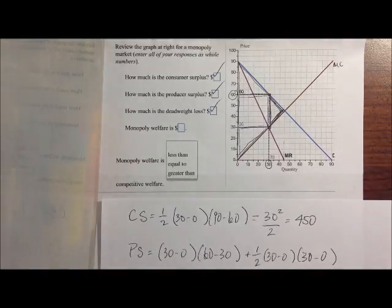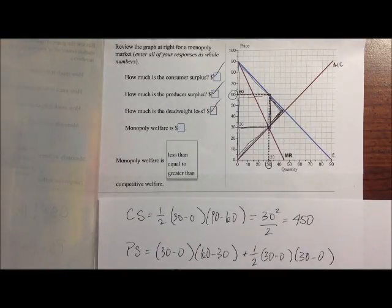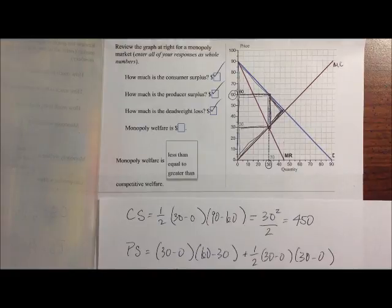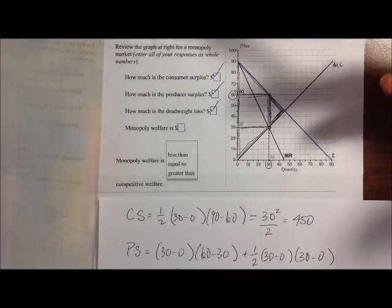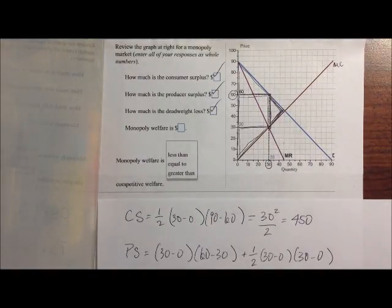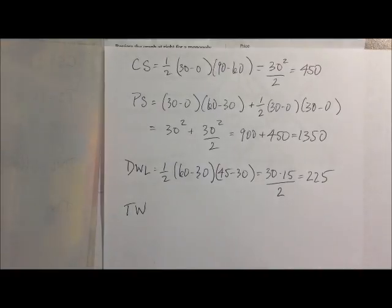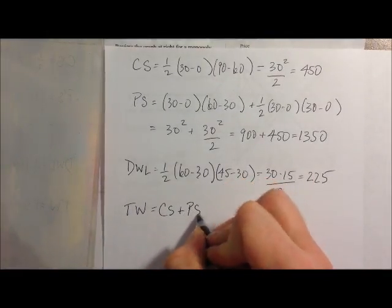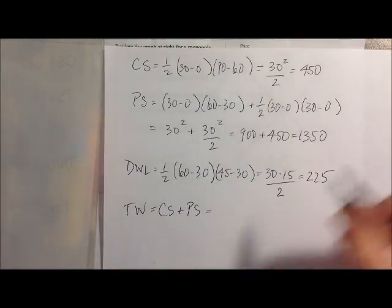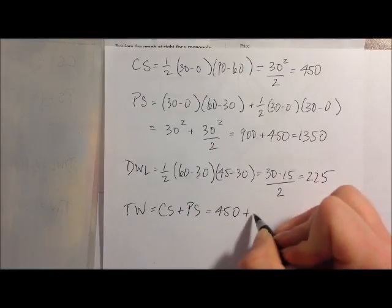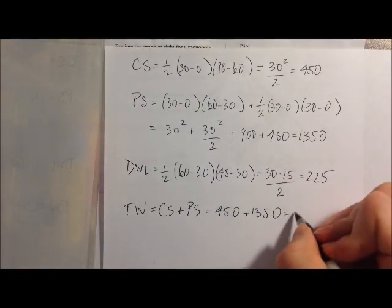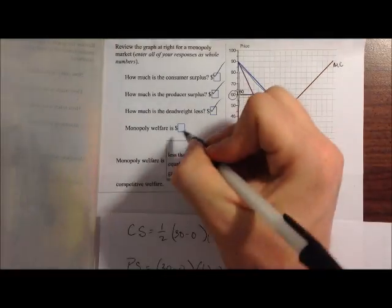And then next we want to know what monopoly welfare is. And so welfare is always just the total gains to all participants in this market. And in this market, the only participants are the buyers and the sellers. Sometimes we see government as a participant, so their revenue would also be part of the total welfare. But in this case, there's no government intervention, so we're just concerned with our consumers and our producers. And so monopoly welfare is just the sum, so I'll call that TW for total welfare, is the sum of consumer surplus and producer surplus. And that's equal to 450 plus 1,350, which is equal to 1,800. So that's our monopoly welfare.